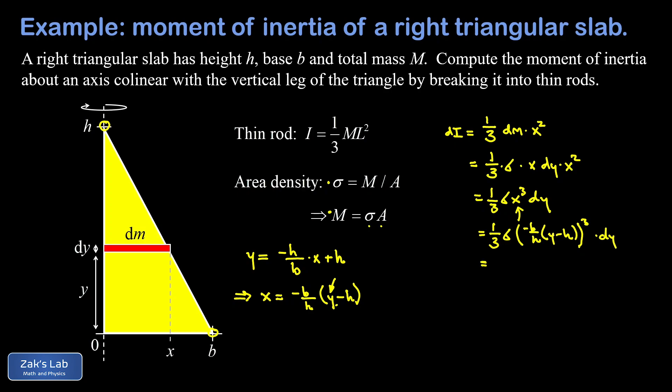When I cube this thing I'm still going to get that minus sign out in front, and I have negative b cubed over h cubed. So just moving all the constants together here, I have negative b cubed sigma over 3h cubed times the quantity (y minus h) cubed dy.